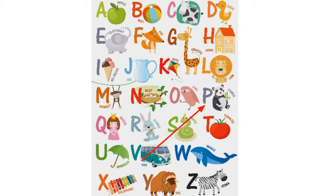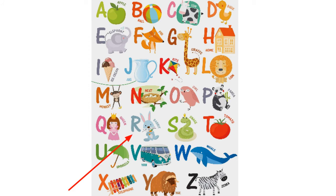P for Panda, Q for Queen, R for Rabbit, S for Snake, T for Tomato.